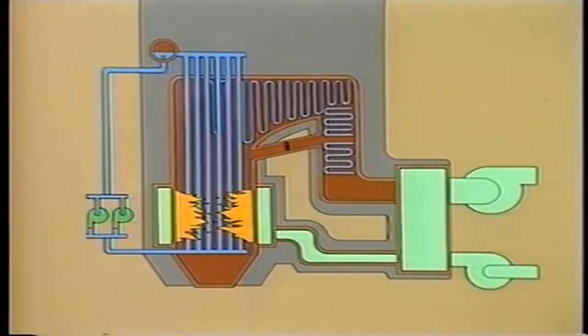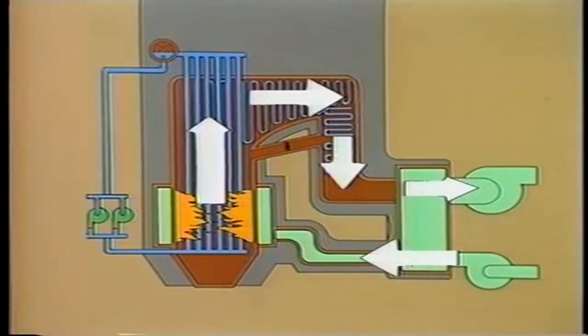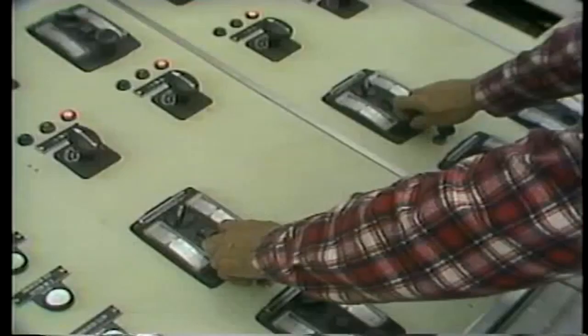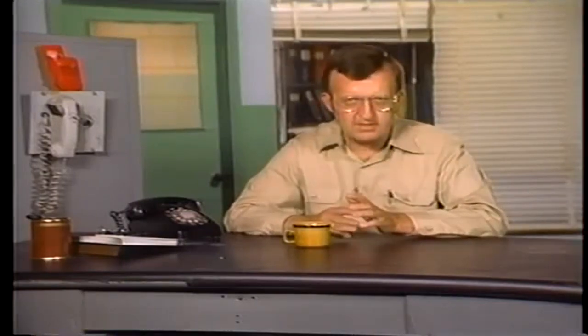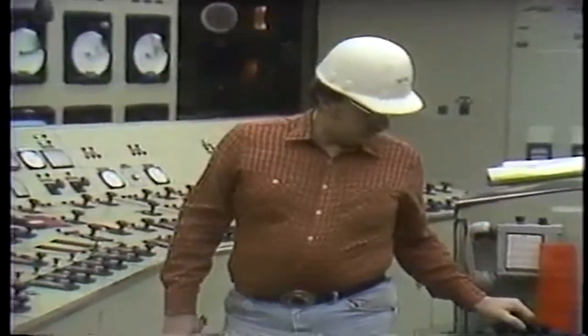If one fan fails, the operator must take appropriate action to stabilize the unit. For example, on a balanced draft boiler, the loss of one ID fan will tend to make the furnace go positive, because the force draft fans are pushing air into the boiler at a greater rate than the remaining induced draft fan can draw air out. Under these conditions, the boiler can continue to operate if the load on the unit is reduced. Most procedures will require that the operator isolate the defective fan and immediately reduce the flow rate of fuel and air to rates which can be handled by one ID fan. This means that steam flow, feed water flow, and condensate flow must also be reduced. Once the load has been reduced and stabilized, the operator should immediately inform the shift supervisor and load dispatcher.